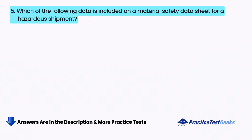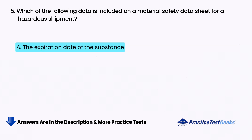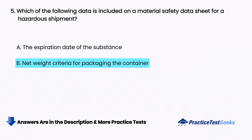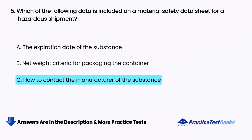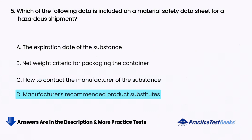Which of the following data is included on a material safety data sheet for a hazardous shipment? A. The expiration date of the substance, B. Net weight criteria for packaging the container, C. How to contact the manufacturer of the substance, D. Manufacturer's recommended product substitutes.